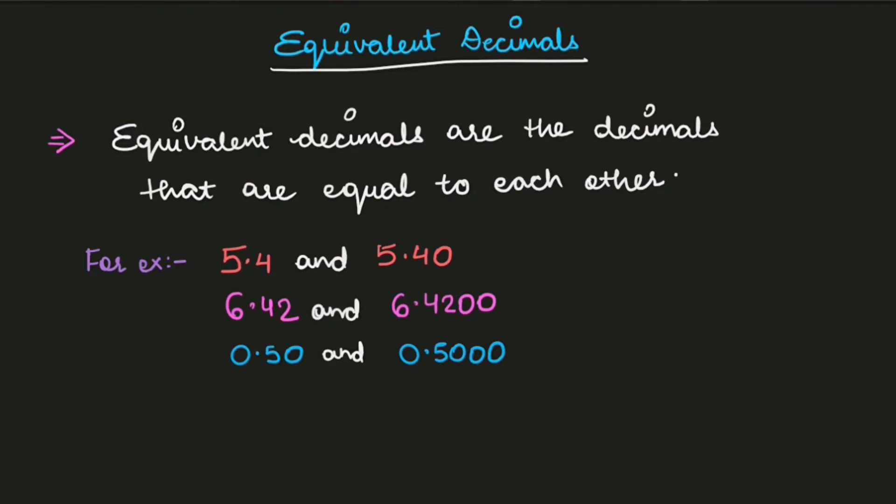There's no big difference. Equivalent decimals are similar to equivalent whole numbers and equivalent fractions. Equivalent decimals are the decimals that are equal to each other.